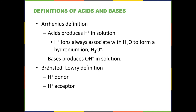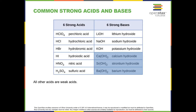Let's look at strong acids and strong bases. There are six strong acids: perchloric, hydrochloric, hydrobromic, hydroiodic, nitric, and sulfuric.